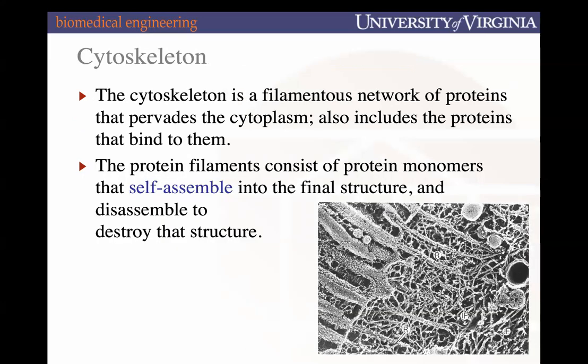The cytoskeleton is a really robust filamentous network throughout the entire cytoplasm of a cell, including the proteins that bind to them serving a variety of functions. It helps give structure and shape to cells, but also provides a functional role in many different processes throughout cell biology. These filaments consist of monomers — single units that polymerize into a polymer. Monomer means one unit; they all stack together to form a polymer, meaning many units that create these filaments of our cytoskeleton.